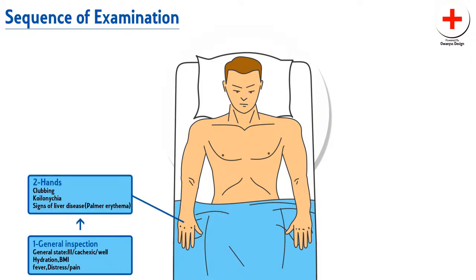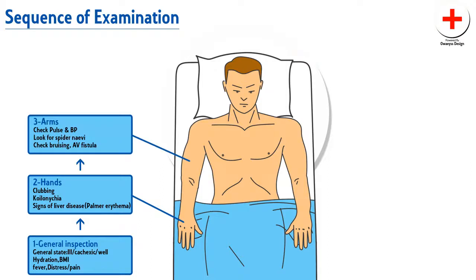Then look at the hands. Is there any clubbing, koilonychia, or signs of liver disease which include palmar erythema? You can also watch our examination of hands video for more details. On the inner arms, check pulse and BP.